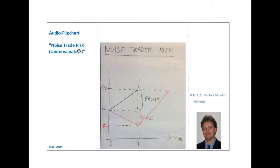Now, let us imagine we are in a situation of undervaluation. Therefore, the price symbolized by the black P is smaller than the fundamental value symbolized by FV.